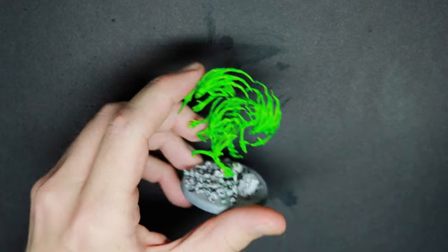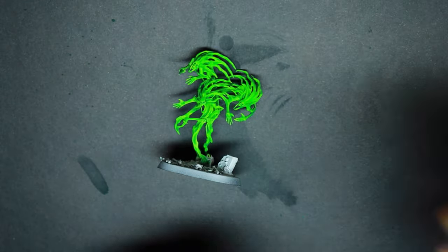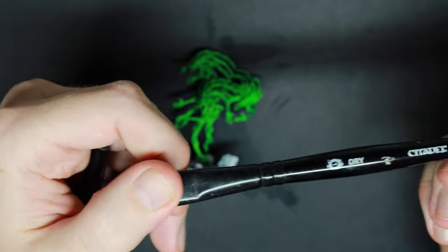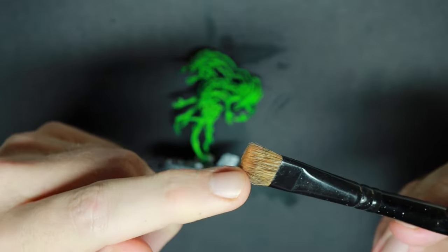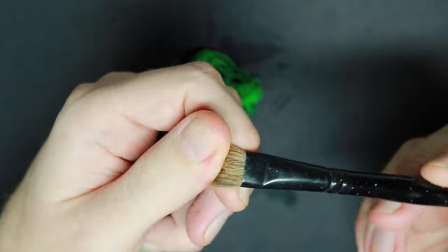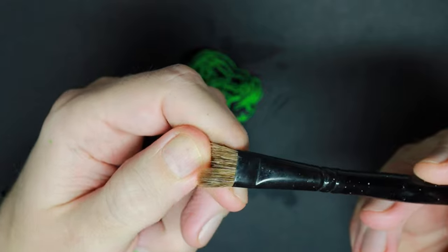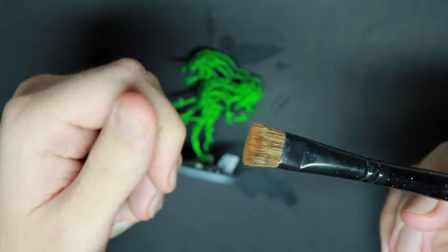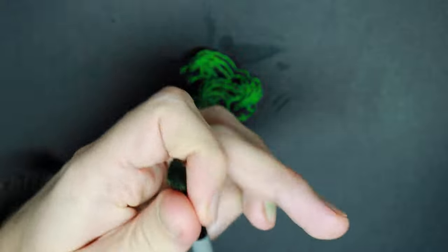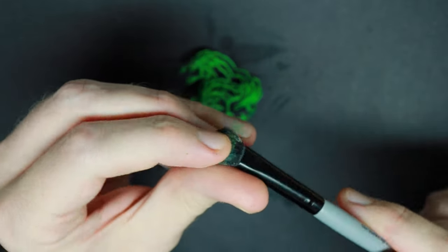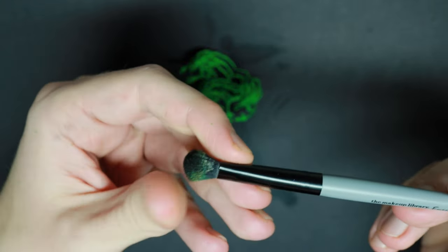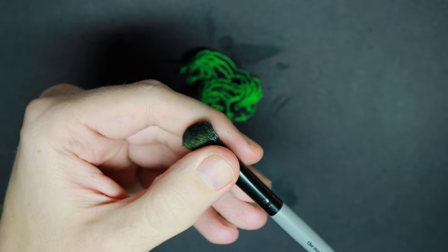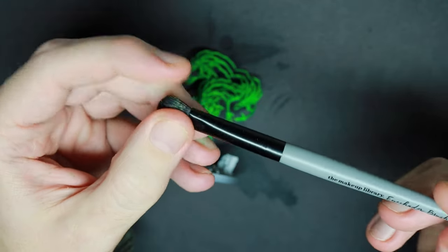You could use a standard dry brushing from Citadel or whatever other company you use. But I find that the bristles is a bit too stiff and will create some unwanted effects on the miniature. I will instead be using a much softer brush. This is just a very cheap makeup brush. You could probably buy the ones from Artis Opus. They are extremely good, but I will just be using these cheap brushes.